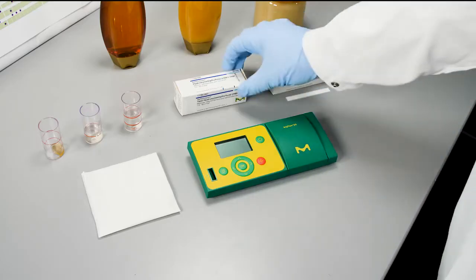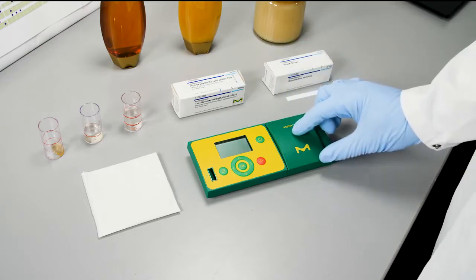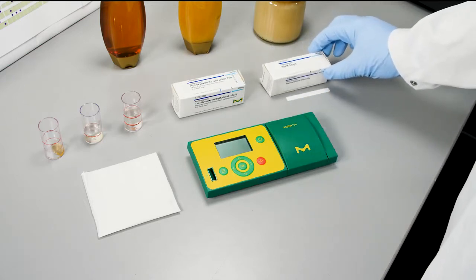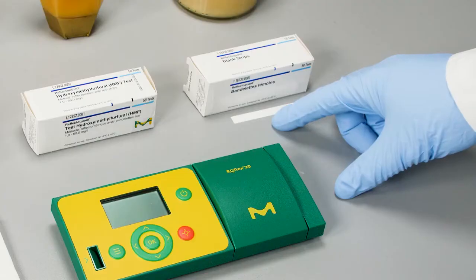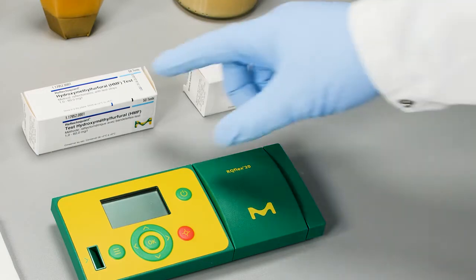What we also need: we need the test strips for the HMF test and the Ecoflex 20. If you have dark colored honey, you can use a blank strip to test if the color has an influence on your result at the end.